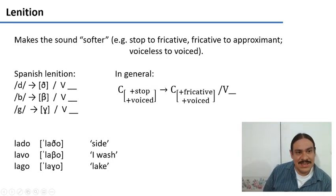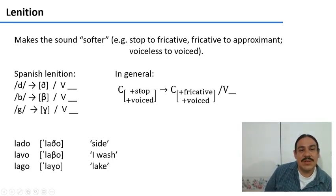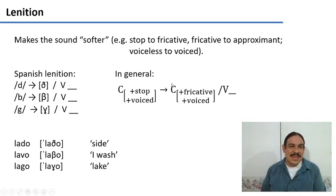This rule can be generalized. As a matter of fact, we have lenition in Spanish whenever there's a consonant that is a voiced stop, like this bilabial stop and this velar stop. Both of them become a voiced fricative whenever there's a vowel before them. This also happens with the bilabial in lavo, I wash, which is written with a v but it's actually a b. And it happens with lago, lake, which has a g but it's pronounced with a fricative, lago. This rule is the lenition of a sound, of the voiced stops in Spanish.